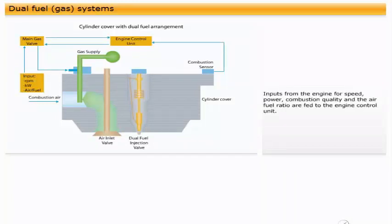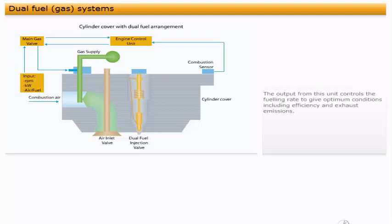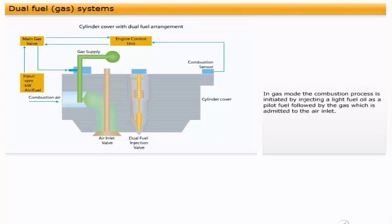Inputs from the engine for speed, power, combustion quality and the air-fuel ratio are fed to the engine control unit. The output from this unit controls the fueling rate to give optimum conditions, including efficiency and exhaust emissions. In gas mode, the combustion process is initiated by injecting a light fuel oil as a pilot fuel, followed by the gas, which is admitted to the air inlet.